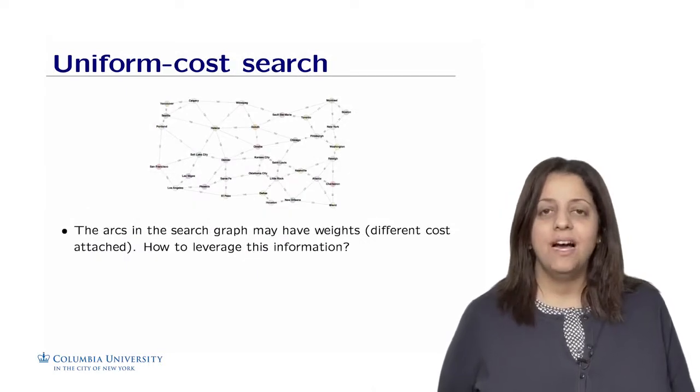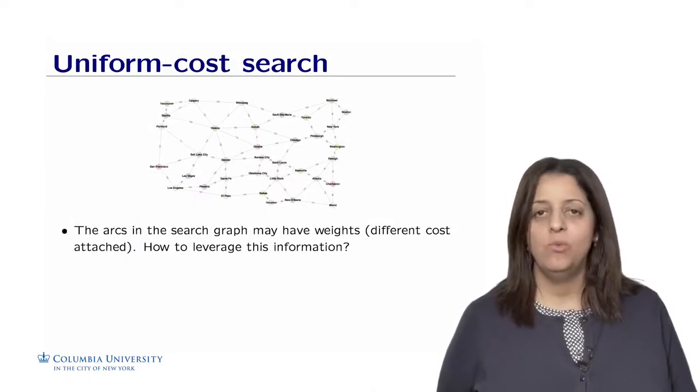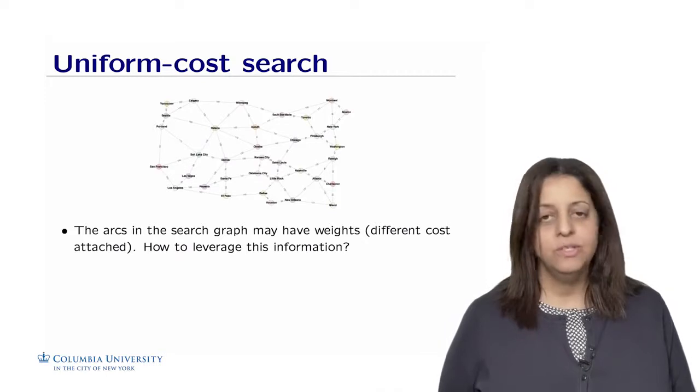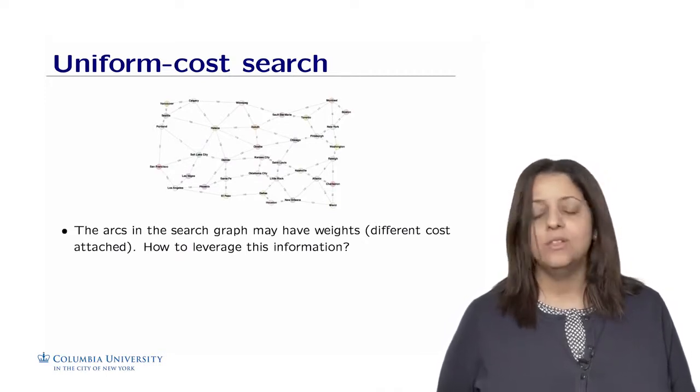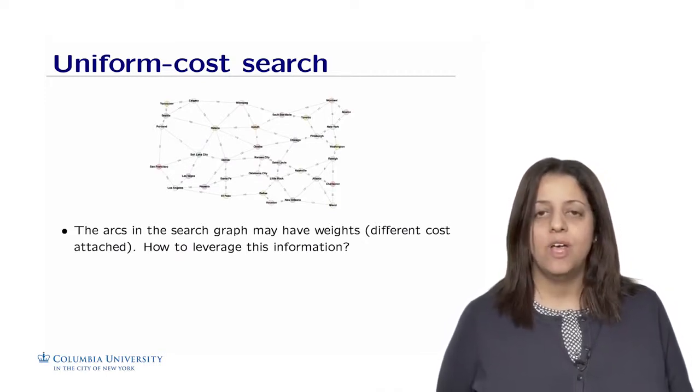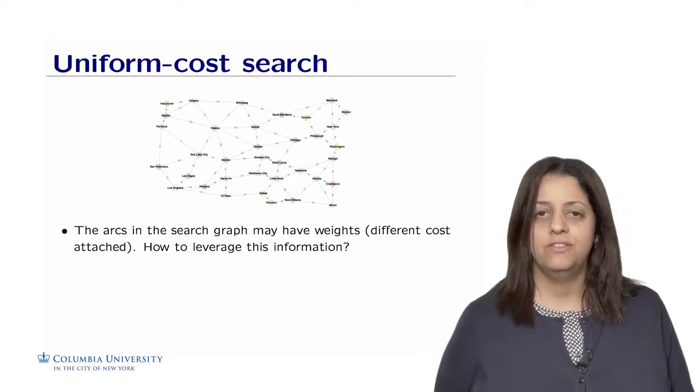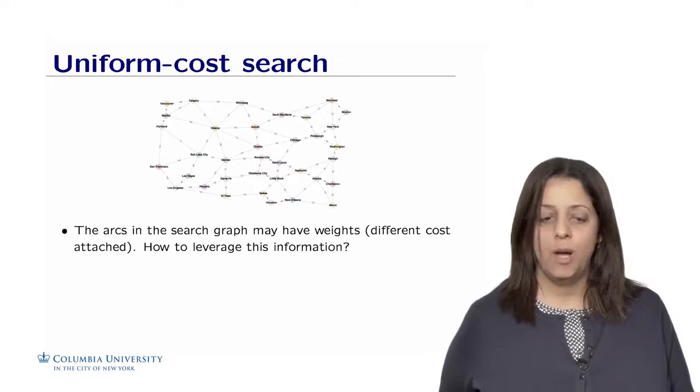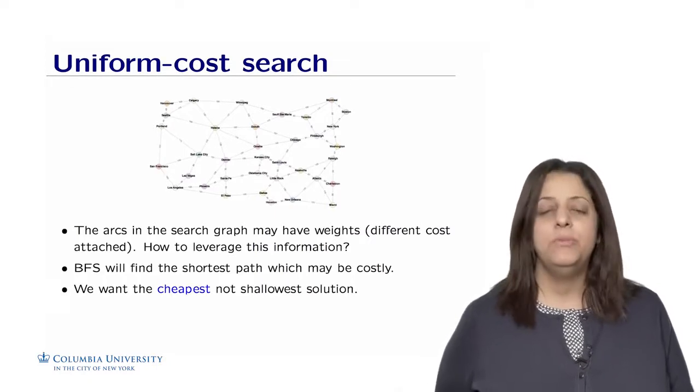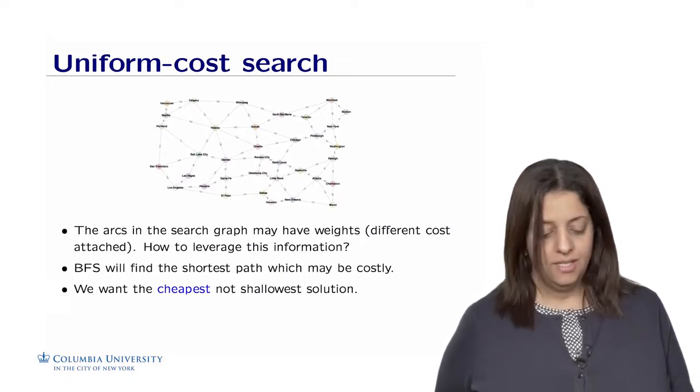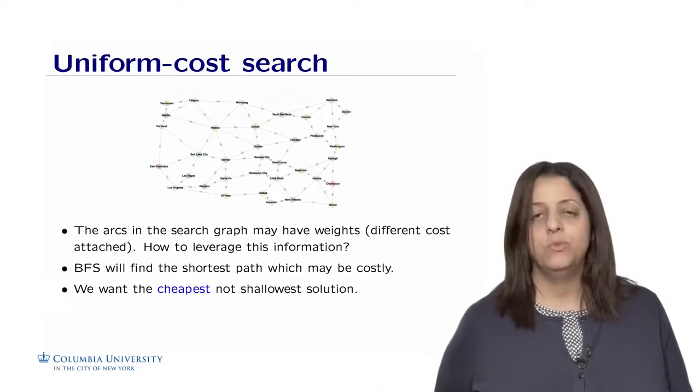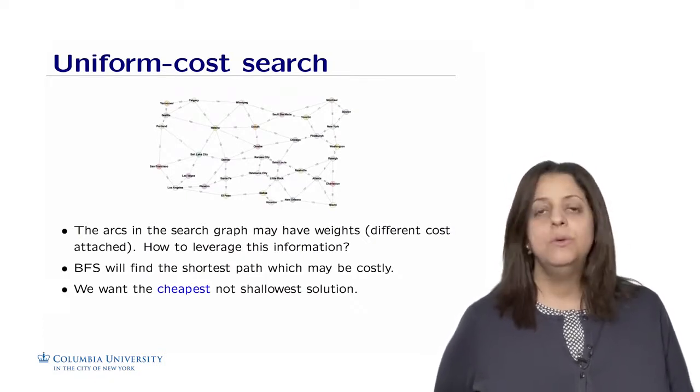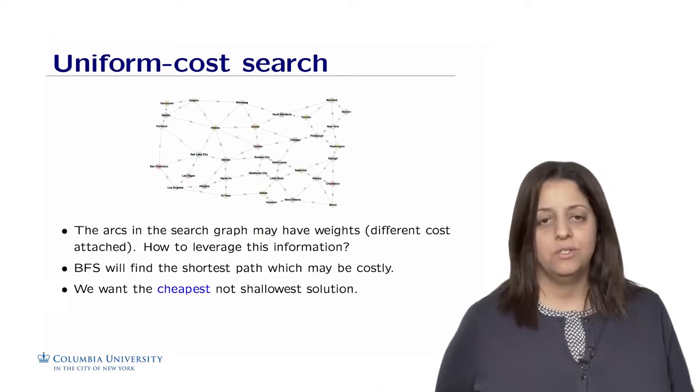You might have noticed that the arcs on the search graph may have some weights or costs. For example, it may be the distance between two cities. And so far, the search algorithms we have been using do not leverage this information. How can we leverage this information to help the search find the optimal solution? Remember, BFS will find the shallowest solution, which is the shortest path, which can be costly. What we want is the cheapest solution, not the shallowest solution.